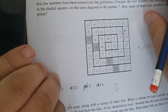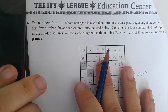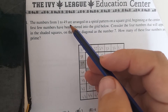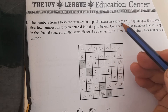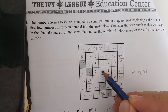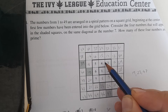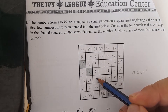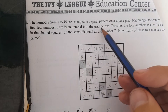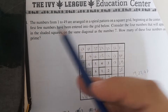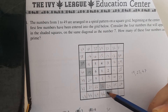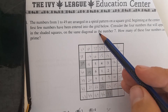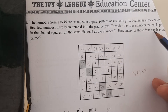I hope you're enjoying the video. This next question is very nice — I enjoyed it a lot. The numbers from 1 to 14 are arranged in a spiral pattern on a square grid beginning at the center. We start from 1, 2, 3, 4, 5, 6, and so on. The first 7 numbers have been entered into the grid. We need to consider the 4 numbers that will appear in the shaded squares on the same diagonal as the number 7. How many of these 4 numbers are prime?